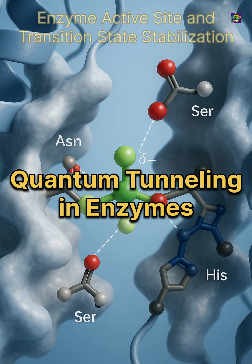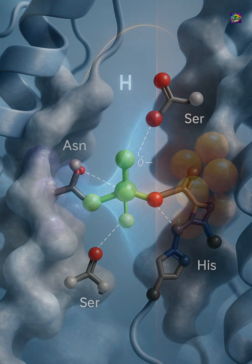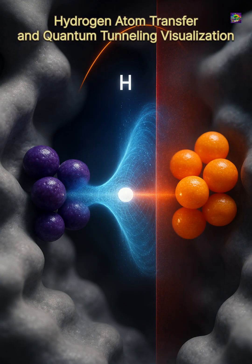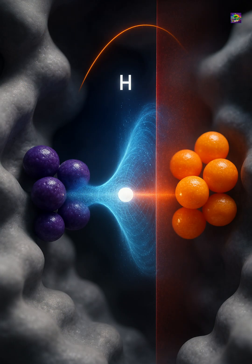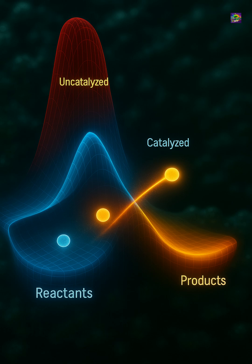Enzymes allow living cells to run reactions far faster than ordinary chemistry would ever permit. They shape molecules, hold atoms in the right positions, and lower energy barriers so reactions can begin. But even after all of this, some reactions still move faster than classical chemistry can explain.